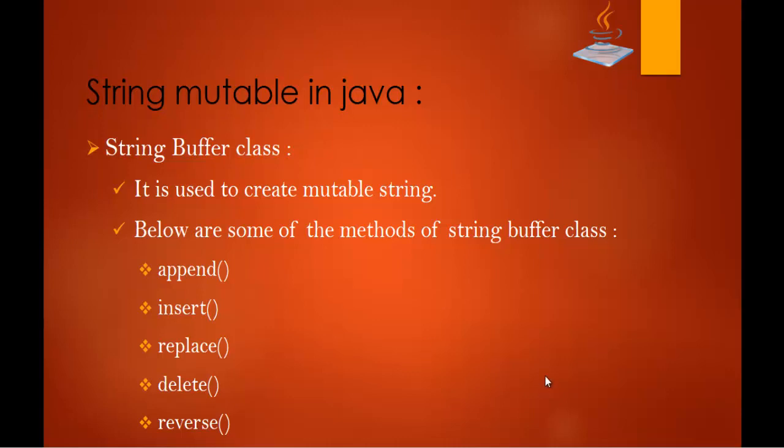Let me show you the advantage of using these methods. First let us understand what a mutable string is — a string that can be modified or changed. To do that we will make use of two important classes: StringBuilder and StringBuffer. Let us understand the StringBuffer class very clearly, so let me jump into Eclipse.